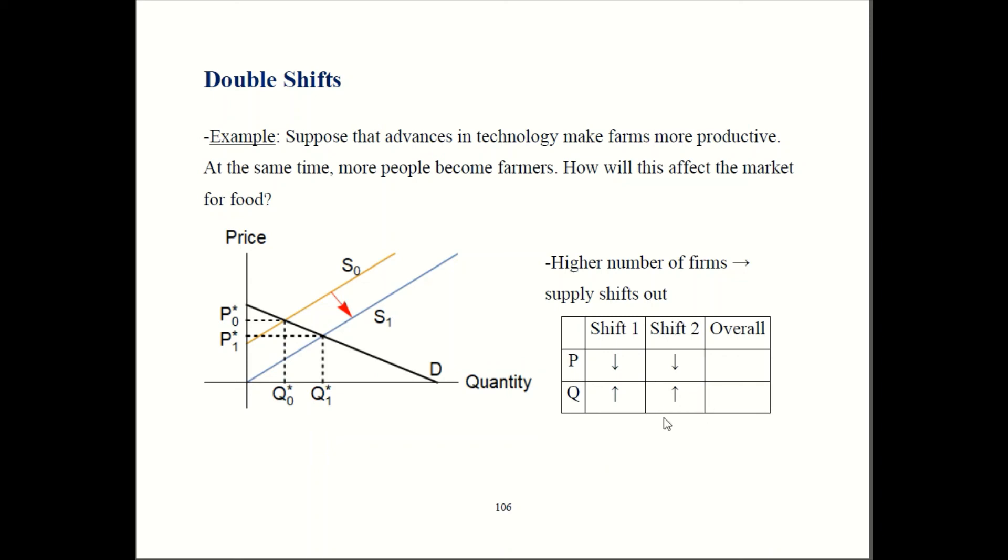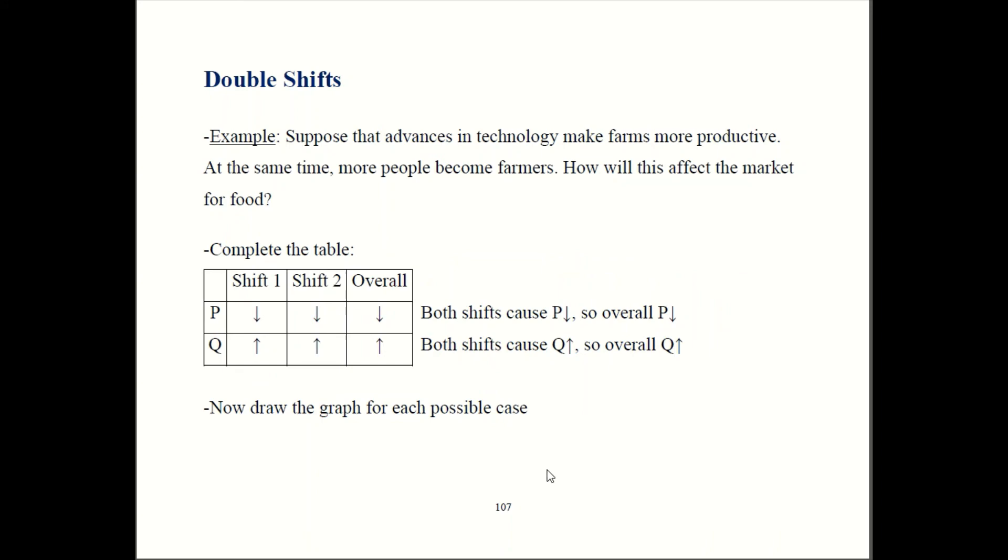So, that's shift number two. Now, we have to go fill in the rest of our table by combining this information. So, the first shift caused price to fall. The second shift also caused price to fall. That means price has to be going down overall. So, they're both in the same direction. That gives you a clear-cut answer for the effect on price.